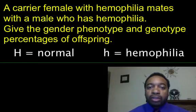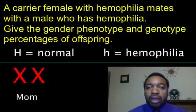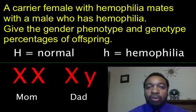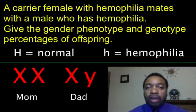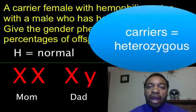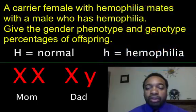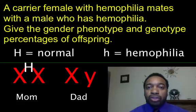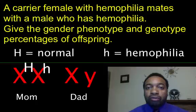The difference is in the parent genotypes. We know that mom is XX and dad is XY, but now we're going to add a superscript for the actual genotypes. If the female is a carrier, she does not display hemophilia but she's heterozygous because she carries the allele for hemophilia. That means we're going to have X superscript big H, X superscript little h — she's heterozygous for hemophilia.